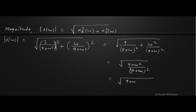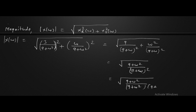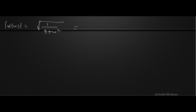The magnitude of X of omega equals the square root of (real part)squared plus (imaginary part)squared. Taking the real part as 3 divided by (9 plus omega squared) and the imaginary part as omega divided by (9 plus omega squared), the magnitude becomes the square root of [9 divided by (9 plus omega squared) squared plus omega squared divided by (9 plus omega squared) squared]. The denominators are the same, so this simplifies to square root of (9 plus omega squared) divided by (9 plus omega squared) squared, which equals 1 divided by the square root of (9 plus omega squared).